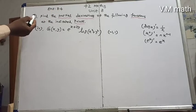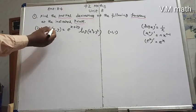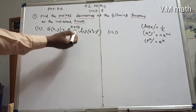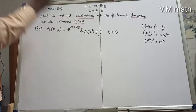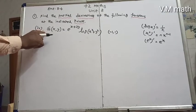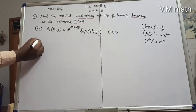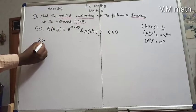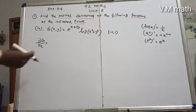Exercise 8.4, question number 1, fourth question. g(x, y) equals e to the power x plus 3y, multiplied by log of x squared plus y squared, evaluated at the point (-1, 1). g is a function with variables x and y. We need to find the partial derivative dg/dx.